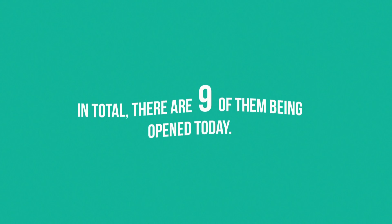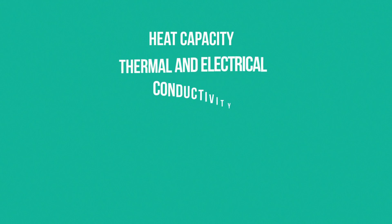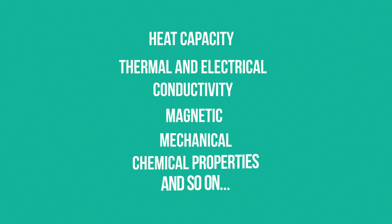Although all these are the same atoms, each modification has its own specific heat capacity, thermal and electrical conductivity, magnetic, mechanical, and chemical properties, and so on. Polymorphic transformations occur under external factors, for example, temperature or pressure.